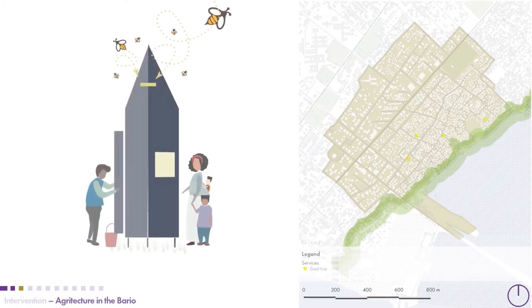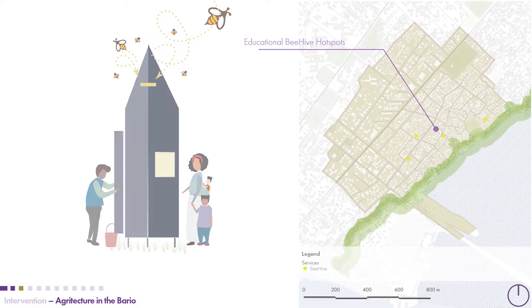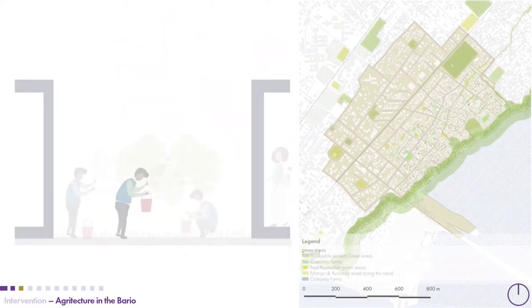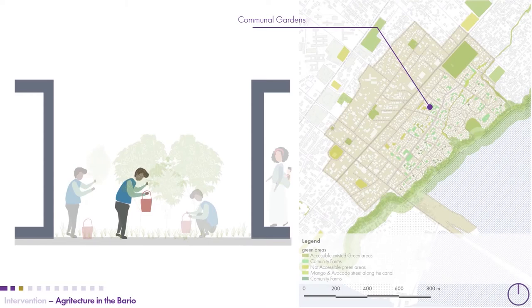We also looked at the agriculture of the barrier. First, we introduced beehives, which serve educational purposes by showing people the importance of bees and their production, while also producing bees within the city. Communal gardens were added where people could look at growing garden plants, which could help increase food production and reduce food shortages.